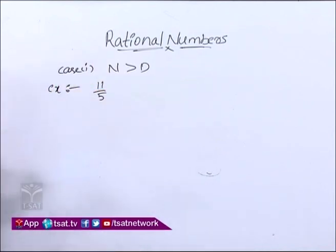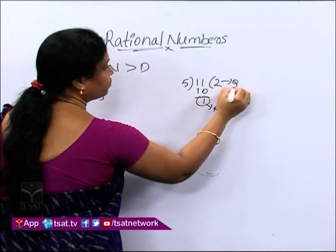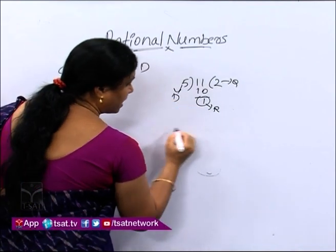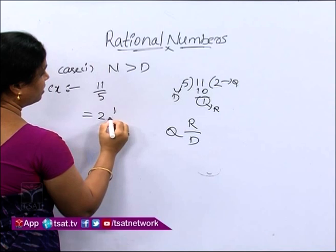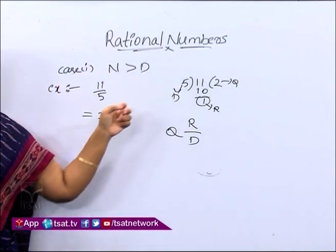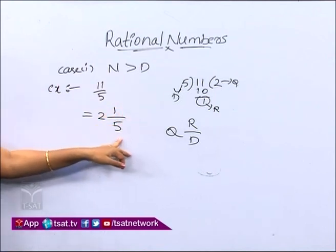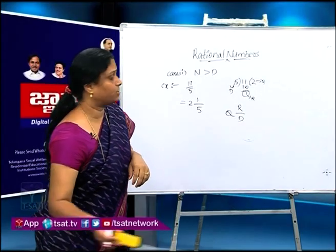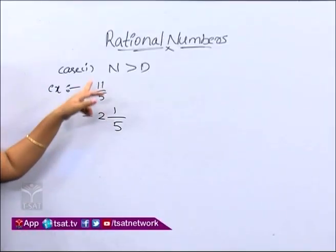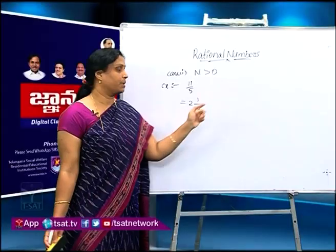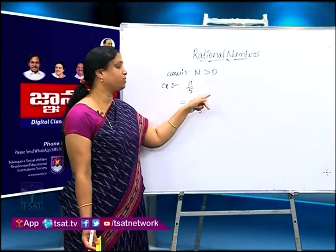How to convert this into a mixed fraction? By doing division. 11 divided by 5: 5 times 2 is 10, remainder 1. So the quotient is 2, the remainder is 1, and the divisor is 5. The mixed fraction is quotient, remainder by divisor. So 11/5 equals 2 and 1/5. This is a mixed fraction. Here 2 is the whole part, 1/5 is the fraction part, 1 is the numerator and 5 is the denominator. To represent a mixed fraction on the number line, the whole part tells us where the number lies — between which whole number and the next whole number. The denominator tells us how many parts to divide, and the numerator tells us how many parts to move forward.